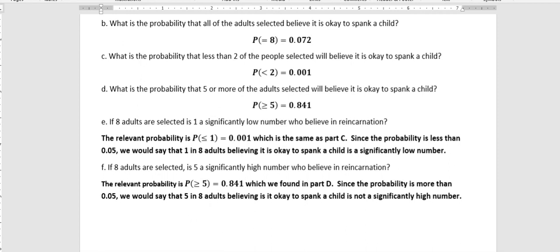If eight adults are selected, is five a significantly high number who believe in reincarnation? Well, the relevant probability there is five or more. So we would say what we did in part D, 0.841.